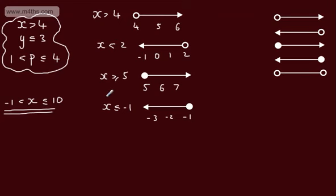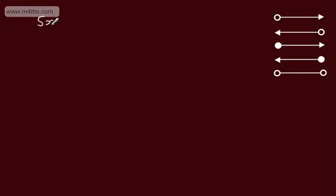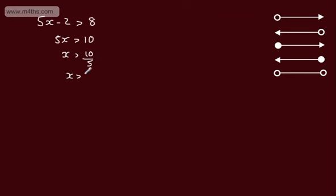Let's look at an example of solving an inequality. When solving inequalities, we use a lot of the same skills as solving equations. We've got 5x minus 2 is strictly greater than 8. We want to find the values of x that make this statement true. We add 2 to both sides: 5x is strictly greater than 10. This is a positive number, so we divide both sides by 5, giving 10 over 5. So x is strictly greater than 2.